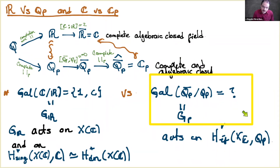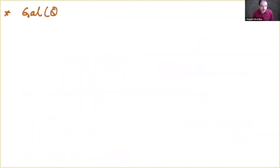These Galois groups can be realized as subgroups of the absolute Galois group of ℚ. If we consider the absolute Galois group G_ℚ = Gal(ℚ̄/ℚ) and take a prime ℓ with a place above ℓ, we can consider the decomposition group of that place — the set of all σ in G_ℚ fixing the place. This is called the decomposition group D_Λ.